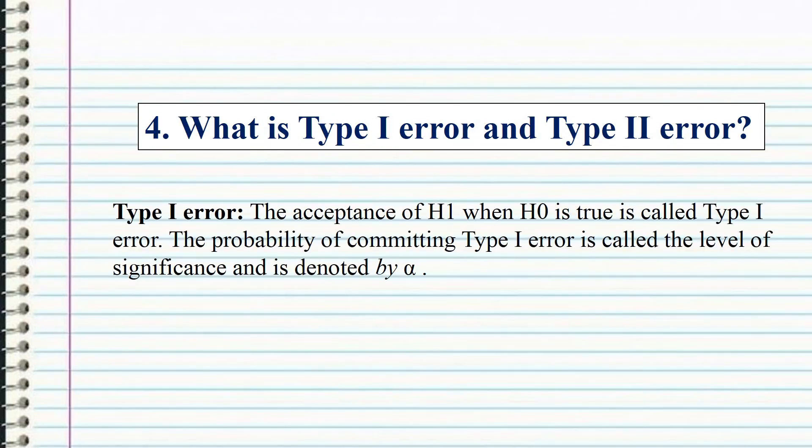Type I error: the acceptance of H1 when H0 is true is called a Type I error. The probability of committing a Type I error is called the level of significance, and is denoted by alpha.